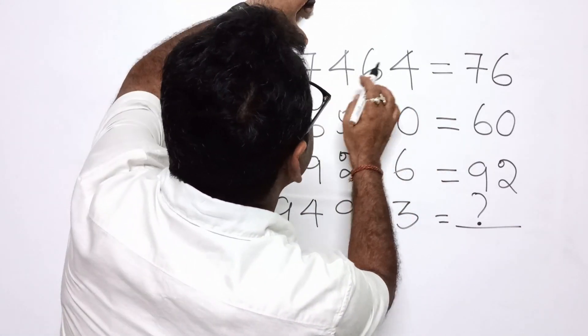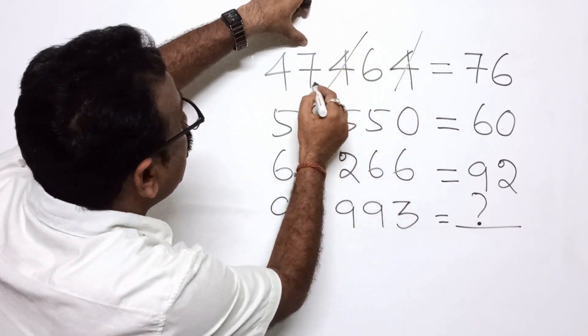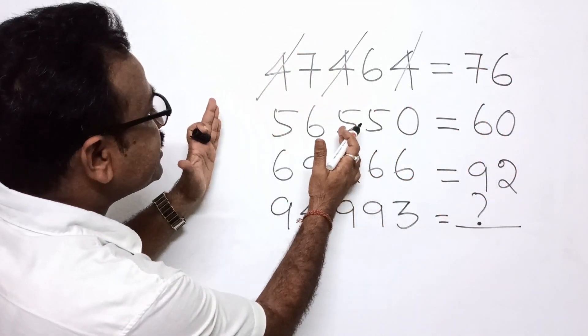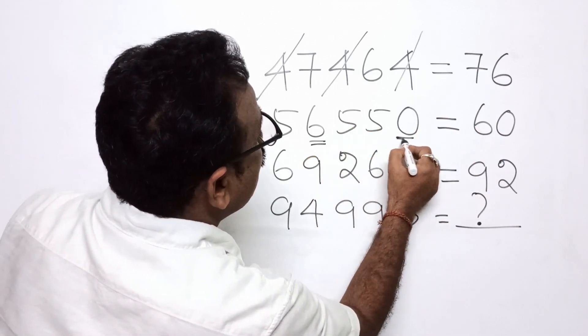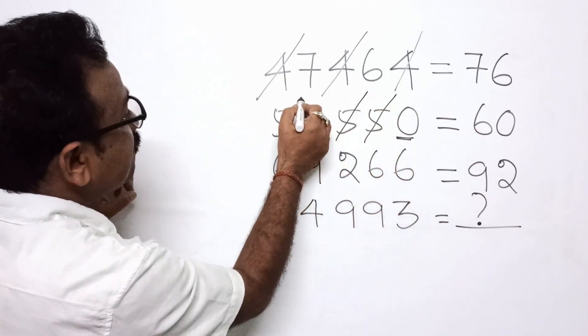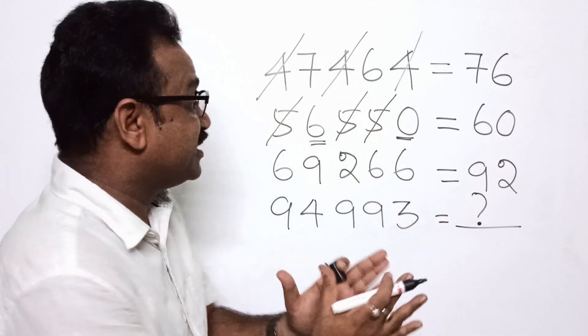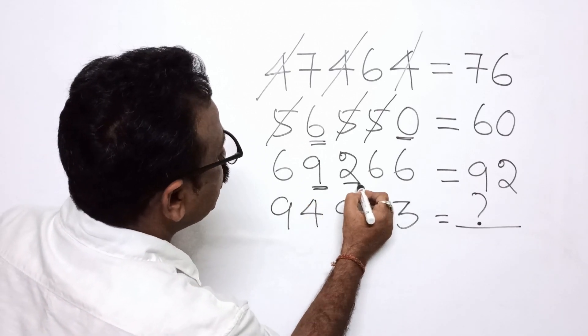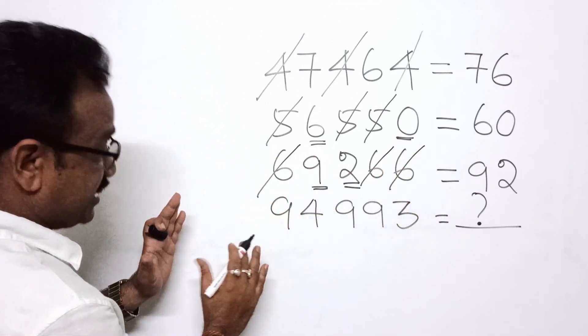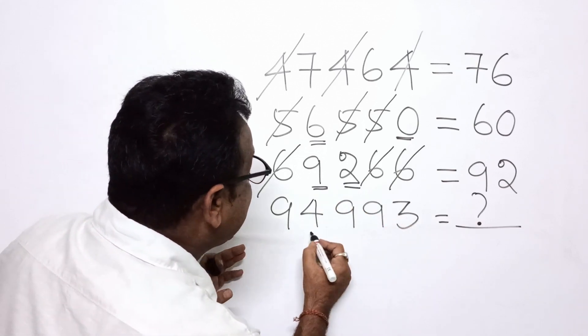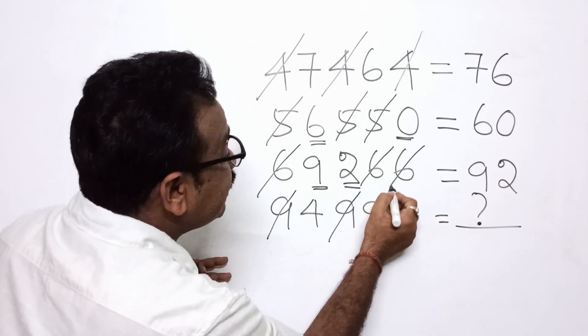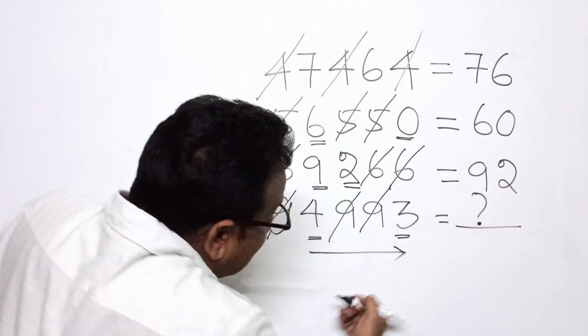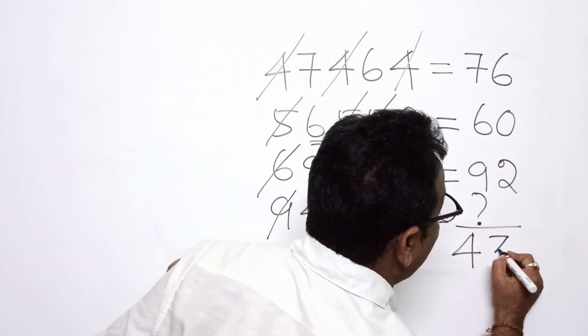So here 76, then 444. These three 4s are cancelled, 76 left. Now second one 6060. This 5555, which numbers are repeated? These are cancelled. Now here third one 92. So 6 repeated, cancelled. Similarly, in the last one which is repeated? 999. Then what's left? 4 and 3, 4 and 3. From left to right, from left to right, the answer will be 43.